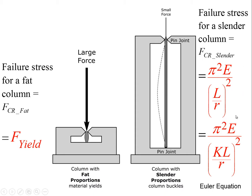This formula came from experimentation and from a brilliant piece of mathematical work by German mathematician Euler — referred to as Euler's equation. Materials that are twice as stiff are twice as strong in buckling. The slenderness ratio goes into the denominator squared, meaning large slenderness ratios produce low critical failure stresses.